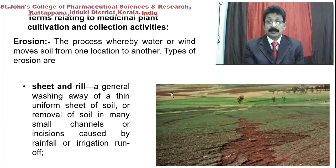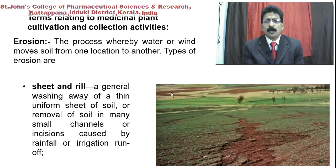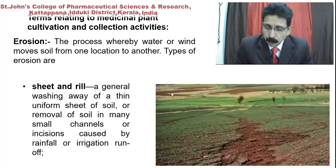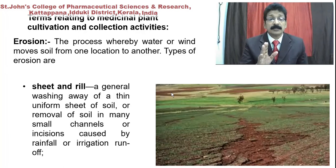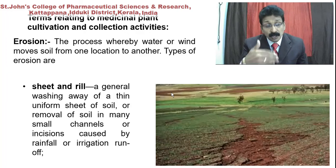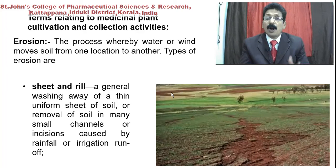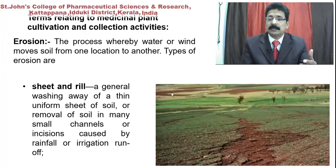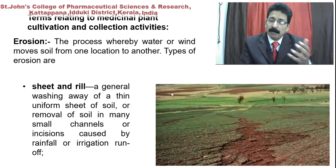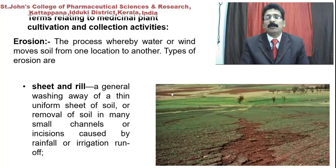Same as good manufacturing process in agriculture, we follow specific parameters according to WHO guidelines. Erosion is a very commonly used term in cultivating normal crops and also medicinal plants. Erosion means the process whereby water or wind moves soil from one location to another. It varies according to depth and how the erosion is taking place in the soil of the cultivation land.